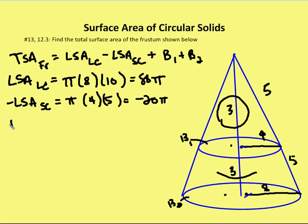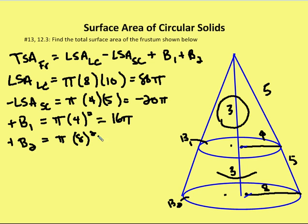And then I want to add in the first base, base 1, which is equal to πr squared, or π times 4 squared, which equals 16π. And then I want to add in base 2, which equals π times 8 squared, which equals 64π.